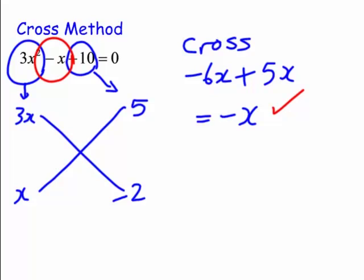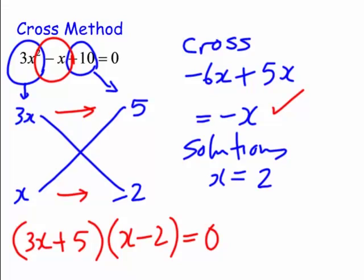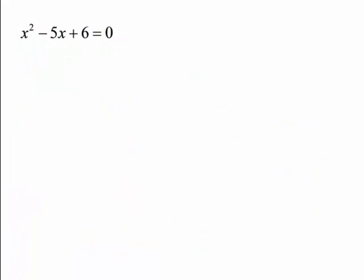Now we have the right orientation of the factors on the cross. To factor it, we read across each row: we get (3x + 5)(x − 2) = 0. Therefore the solutions are: x equals 2 (whatever makes x minus 2 equal zero), and from 3x + 5 = 0, x equals minus 5 over 3.